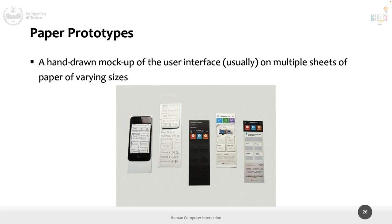Let's have a look at low fidelity prototypes, and particularly paper prototypes — that's how we define low fidelity. We said yesterday that low fidelity means low fidelity in realism or in usage. One popular way to create low fidelity prototypes is using pen and paper, or the digital equivalent with a pen and tablet. A paper prototype is a hand-drawn mock-up of the user interface, usually on multiple sheets of paper of various sizes.